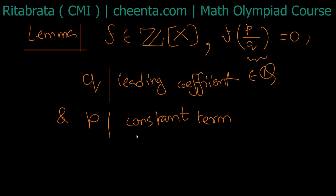If f(x) = a₀ + a₁x + ... + aₙx^n, then q divides aₙ and p divides a₀. You can easily check it by putting a₀ + a₁(p/q) + ... + aₙ(p^n/q^n) = 0, multiply by q^n, then check modulo p and modulo q.